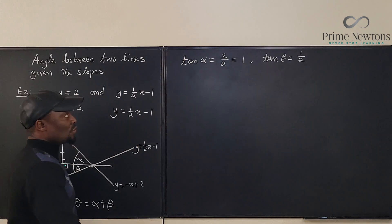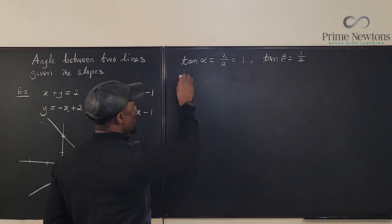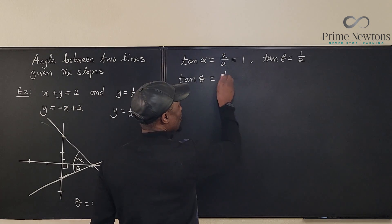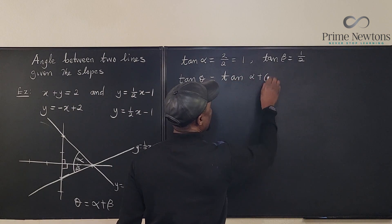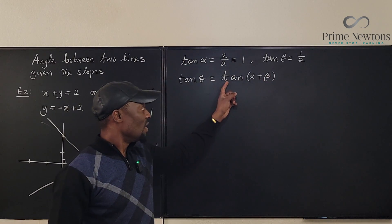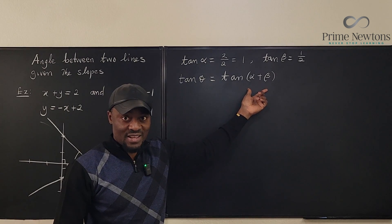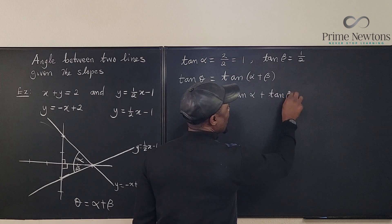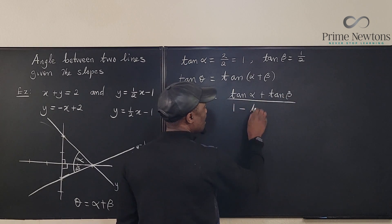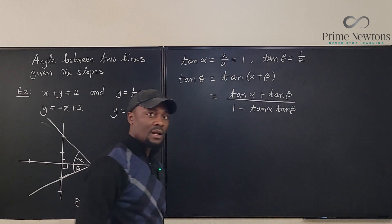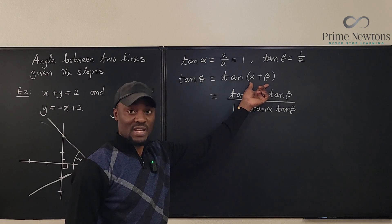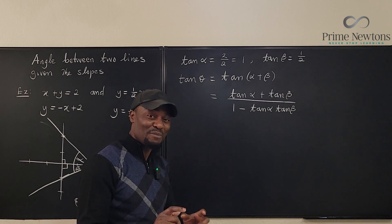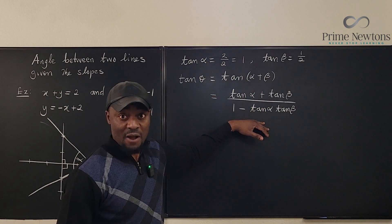Now, theta is what we're looking for, and we know theta = alpha + beta. So tan(theta) = tan(alpha + beta). From your trig class, you recall the tangent addition formula: tan(alpha + beta) = (tan α + tan β) / (1 − tan α · tan β). There's a small adjustment needed when using slopes, but based on what we've obtained, let's work this out.